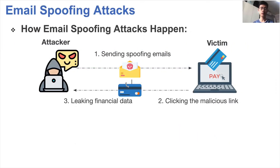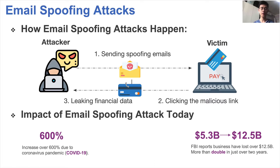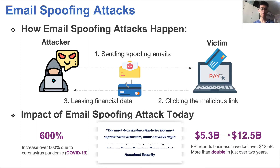Let's take a look at how email spoofing attacks happen. An attacker sends spoofing emails as a faked identity. When the victim opens the email and clicks on the malicious link, it will lead to serious phishing attacks such as financial data leaks. Although email spoofing is an old and simple attack, it still has a huge impact today. Email spoofing attacks have increased over 600% due to the coronavirus pandemic. The FBI also reports that email phishing attacks have resulted in a loss of $12.5 billion over just two years. As Jane Jameson, former Secretary of the Department of Homeland Security said, the most devastating attacks by the most sophisticated adversaries almost always begin with the simple attack of spear phishing.